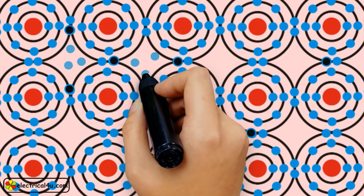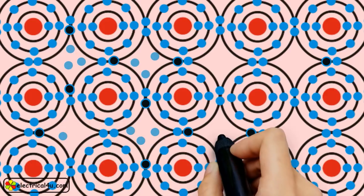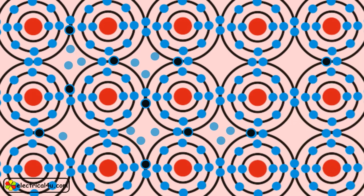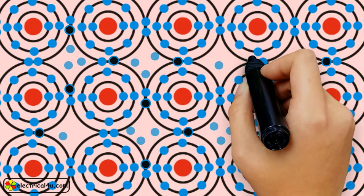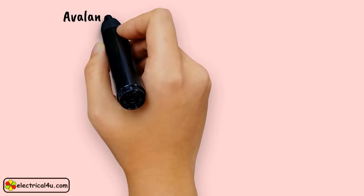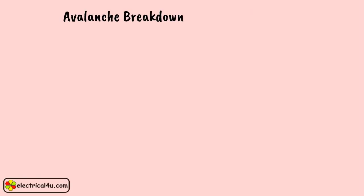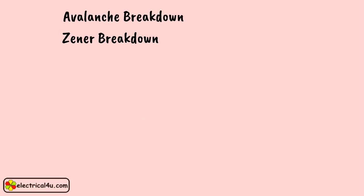Due to this cumulative phenomenon, very soon a huge number of electrons will be created in the depletion layer and the entire diode will become conductive. This type of breakdown of the depletion layer is known as avalanche breakdown, but this breakdown is not quite sharp. There is another type of breakdown in the depletion layer which is sharper compared to avalanche breakdown, and this is called Zener breakdown.